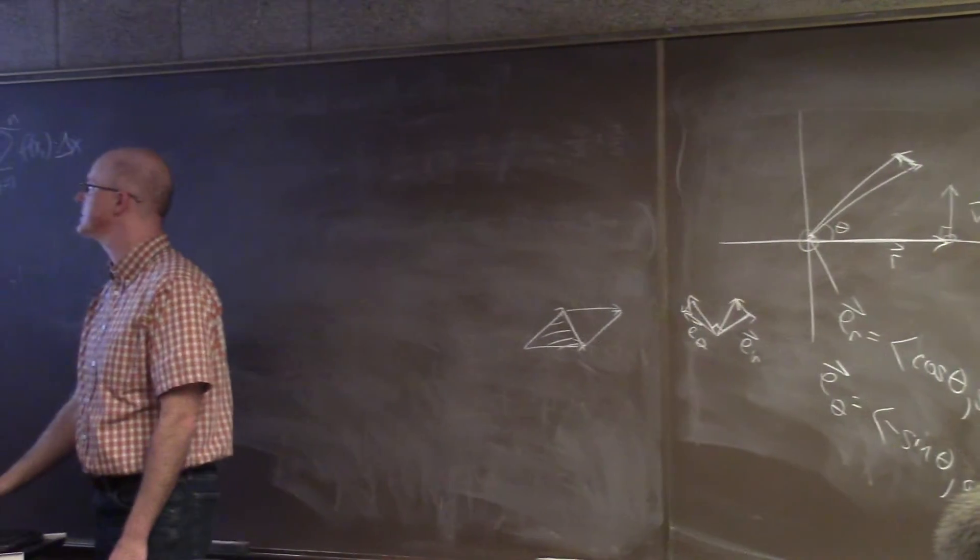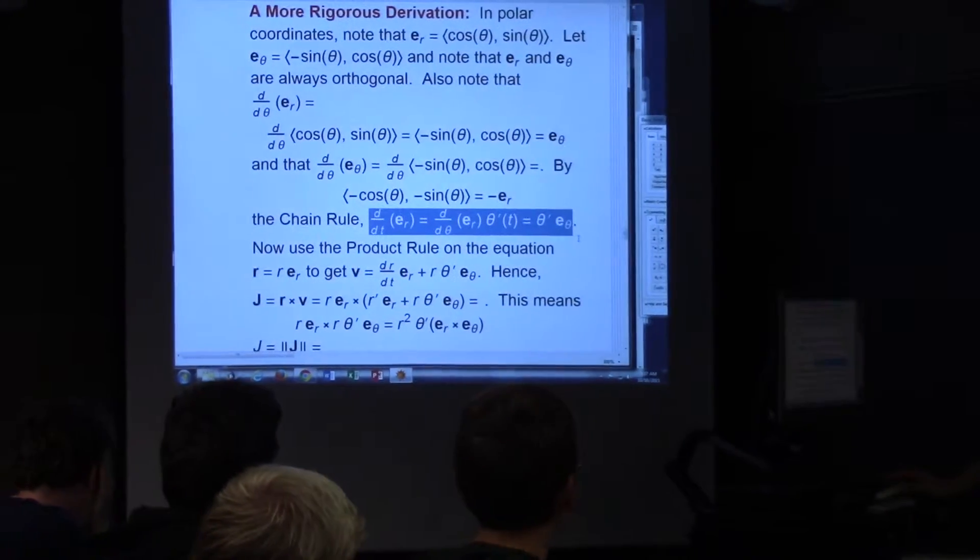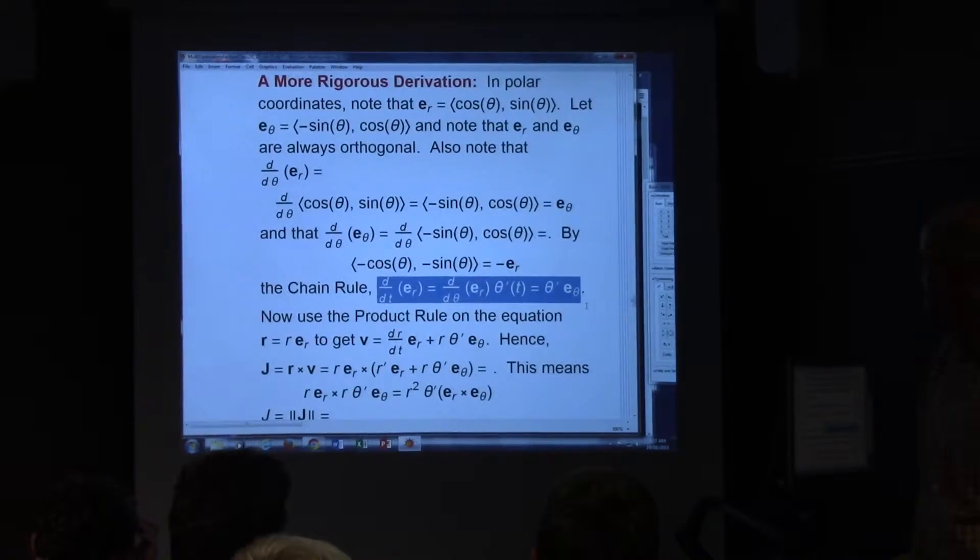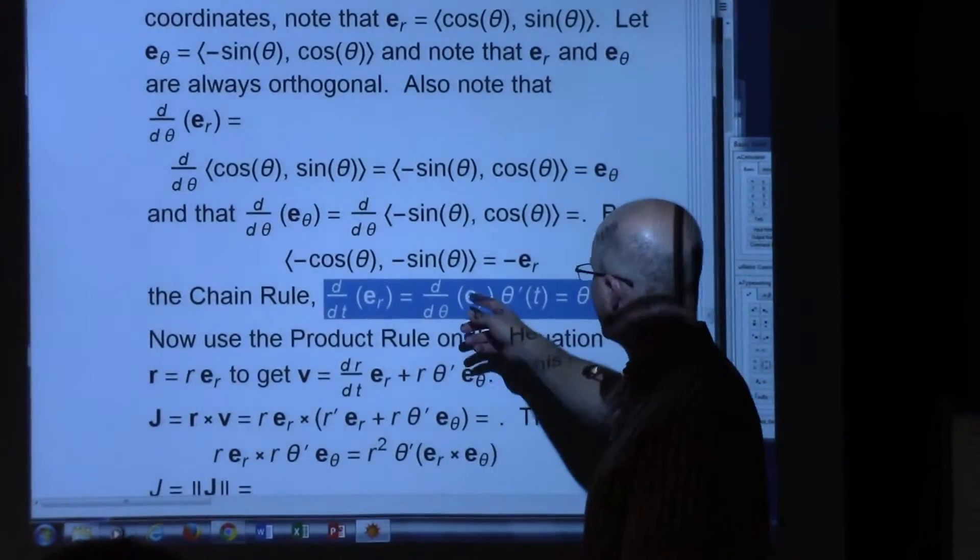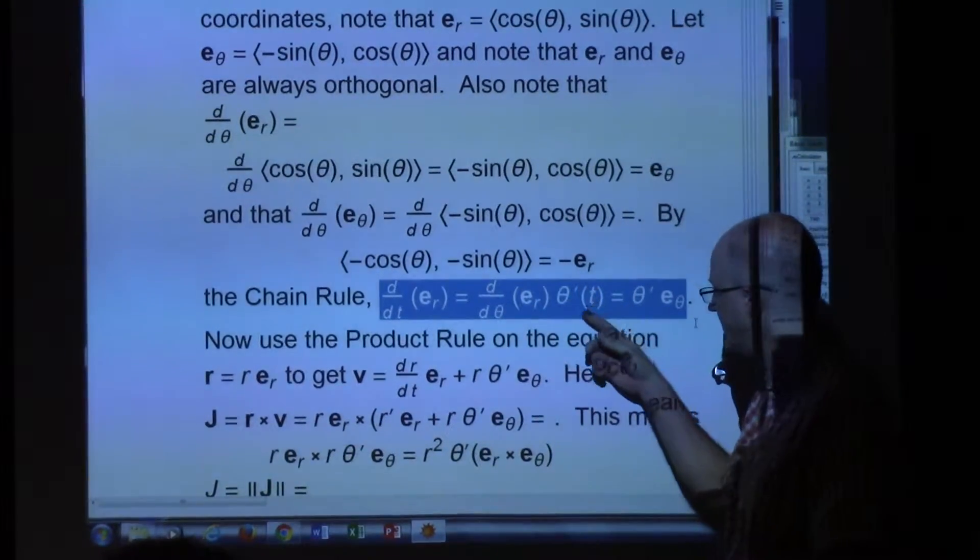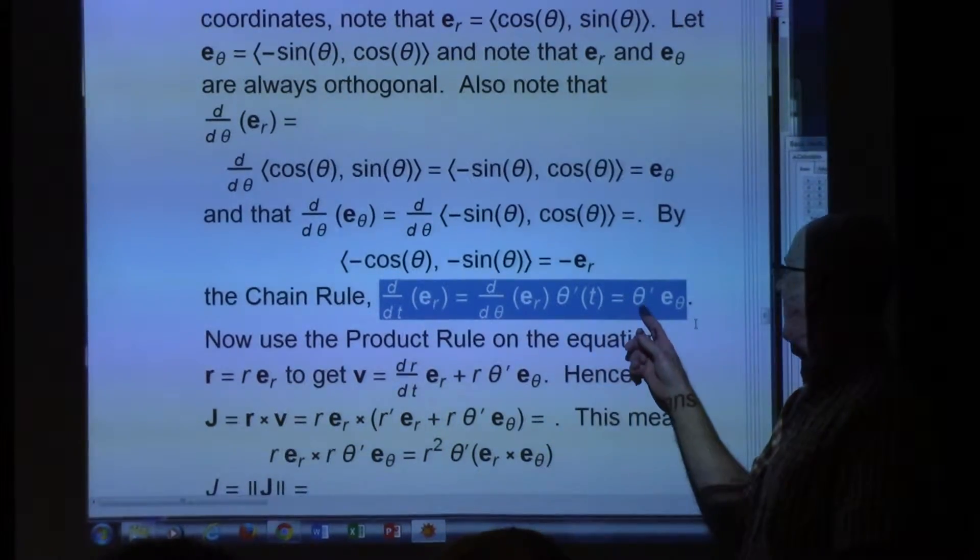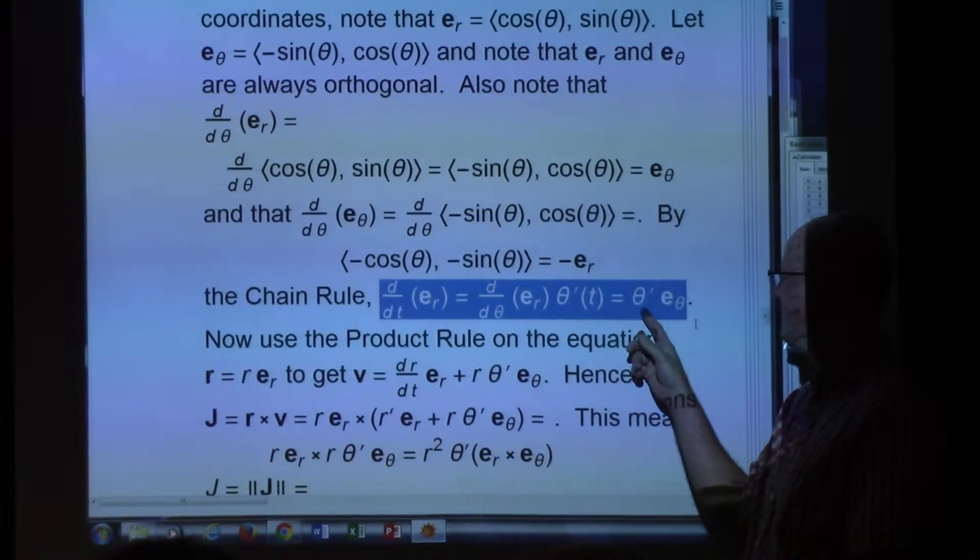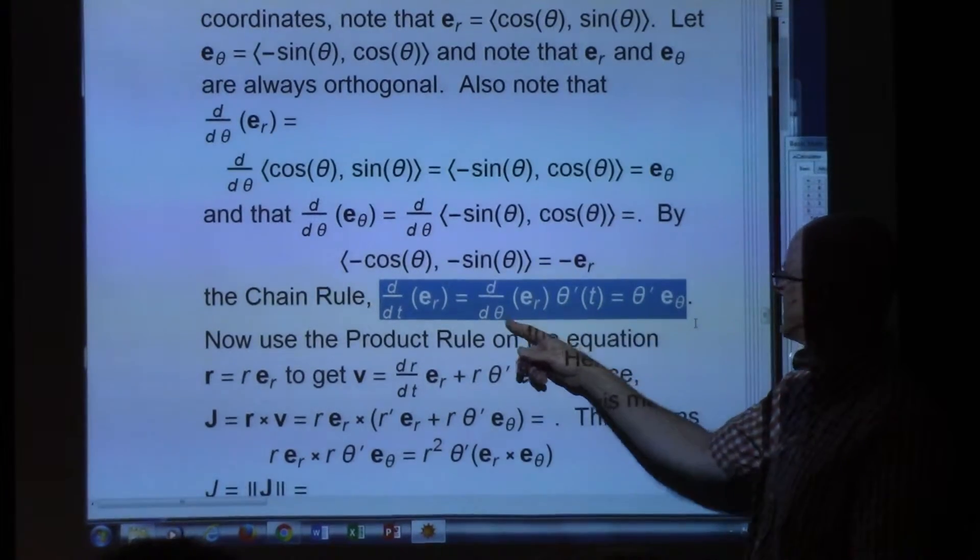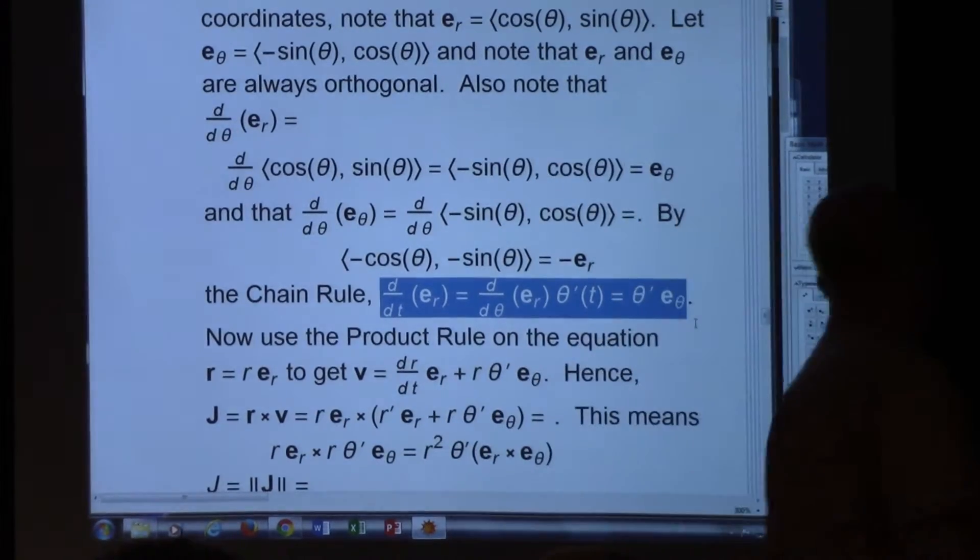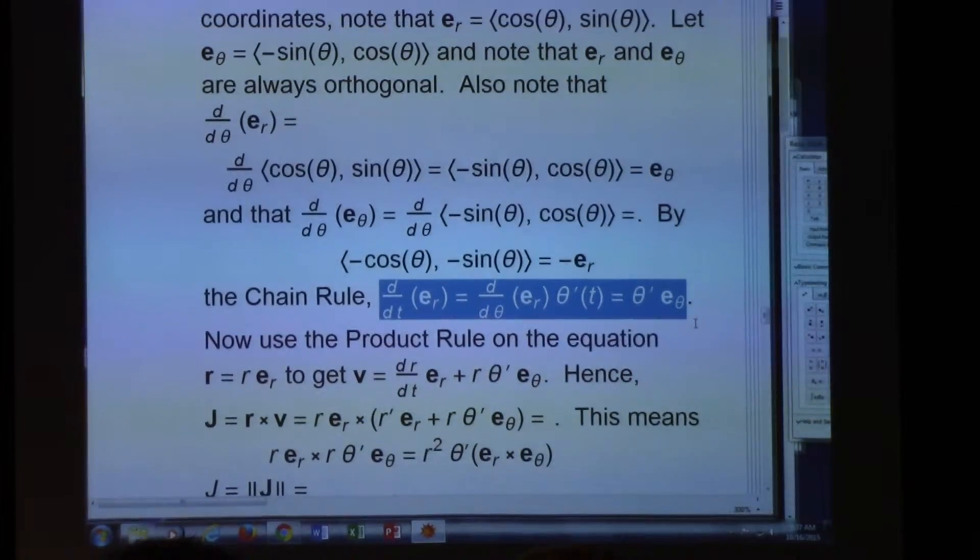Everything does depend on time, though, so we can use the chain rule to relate these derivatives with respect to time. The derivative of ER with respect to time is first its derivative with respect to theta times the derivative of theta with respect to t, which I often will shorthand, like the book does, just write it as theta prime here. And we know this derivative is E theta. That's a fact, so just keep track of here.